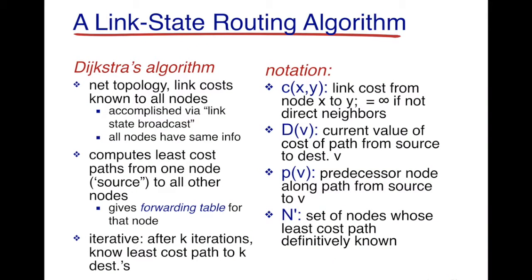In this video we'll be talking about Dijkstra's algorithm. Dijkstra's algorithm is used to find the shortest path from a node to all other nodes in a network. We consider the entire network as a graph, then use Dijkstra's algorithm to compute the least cost path from one node, known as the source, to all other nodes. Once computed, these paths are used to build the forwarding table at different nodes.